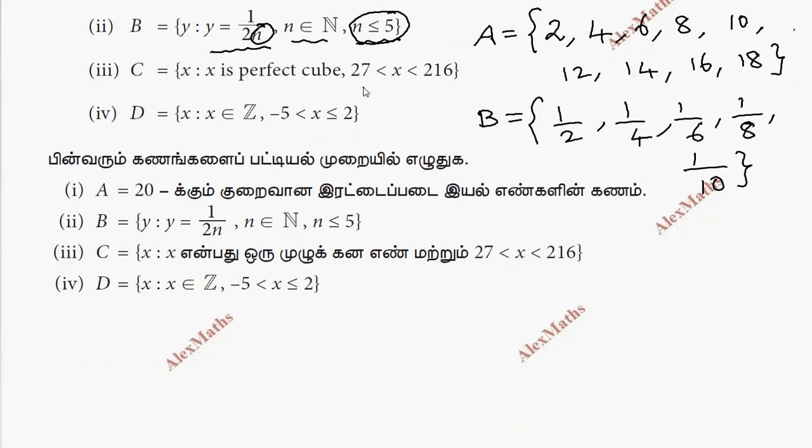Subdivision C. x is a perfect cube, 27 and 216. So 27 less than x less than 216. 3 cube, 3 cube is a perfect cube.